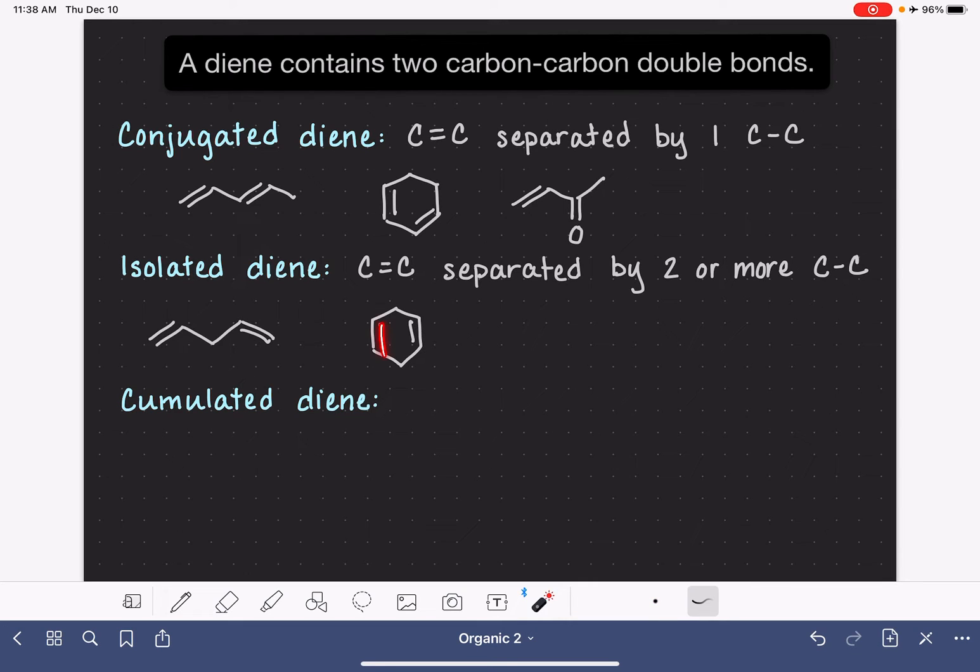Between the two double bonds, no matter which way you go around the ring, there are two single bonds between them. And if we want to continue using something with a carbon-oxygen double bond, it could go like this. That would be an isolated diene because we have two single bonds separating the carbon-carbon and carbon-oxygen double bond.